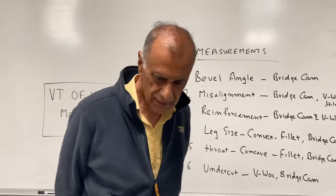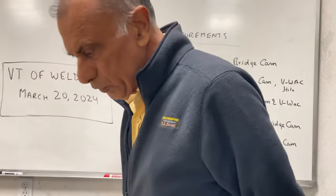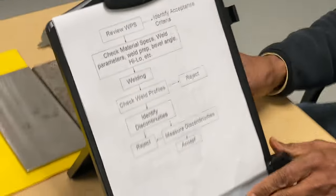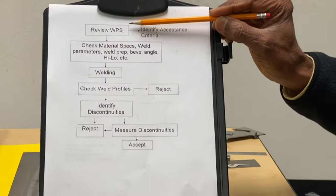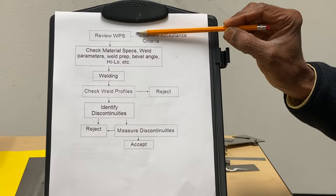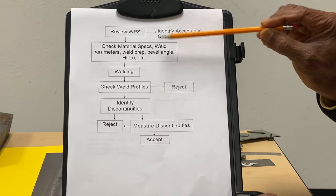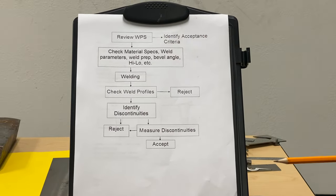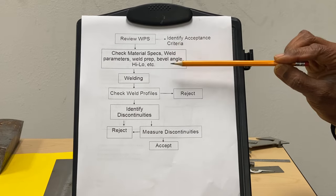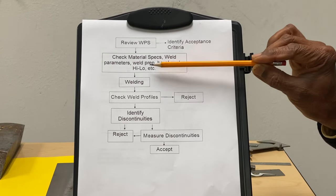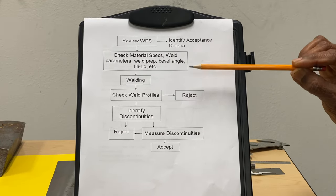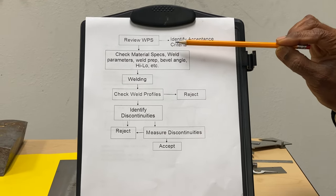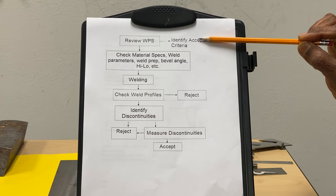This is the basic flowchart for the visual inspection of welds. The first step is to review the welding procedure specification, called the WPS, which will define how the welding will be done. It will give you the material specs, the weld parameters, the weld preparation, bevel angle, misalignment allowed, and it will also define the acceptance criteria for the final weld — a one-liner specifying which code to use.